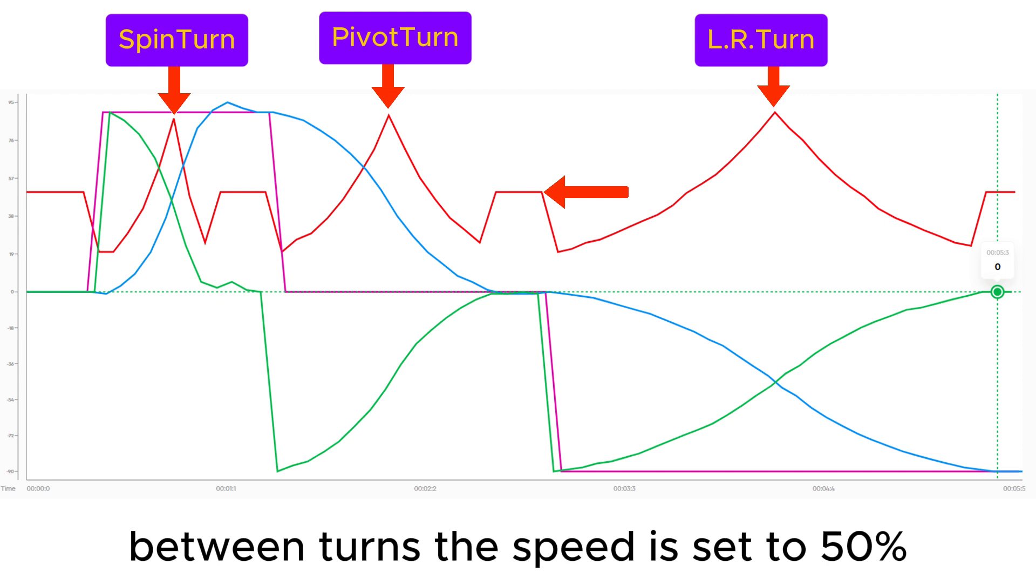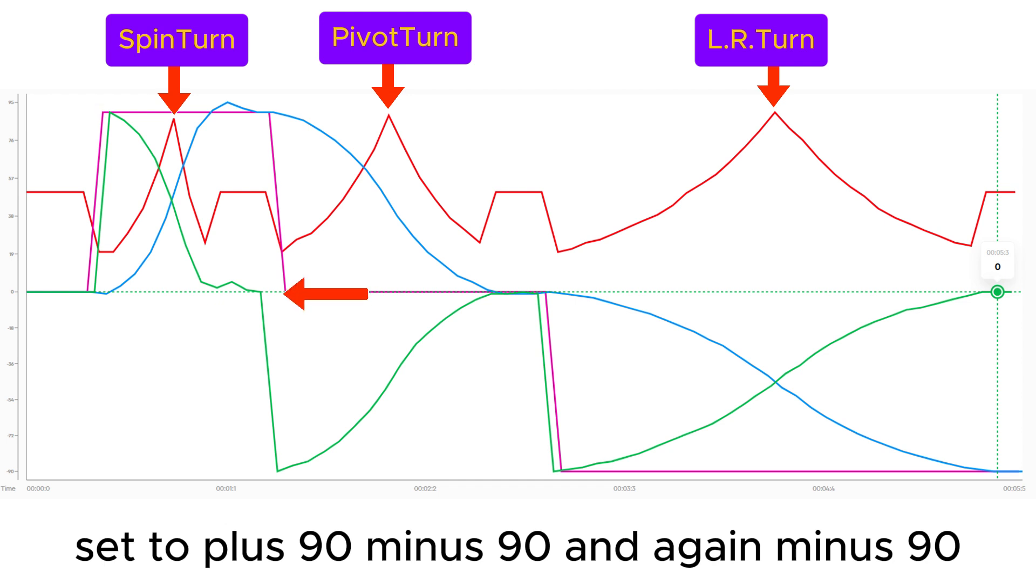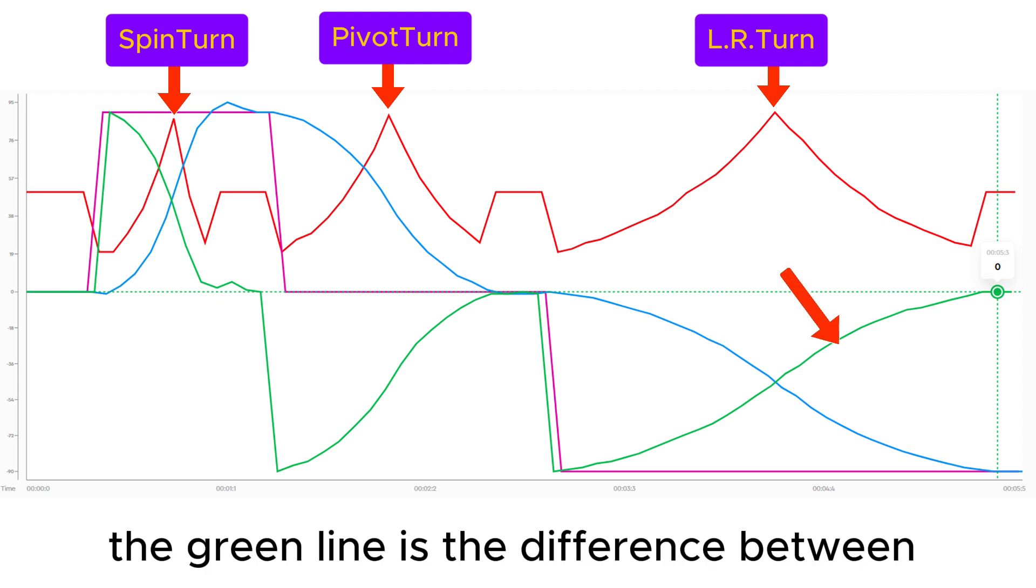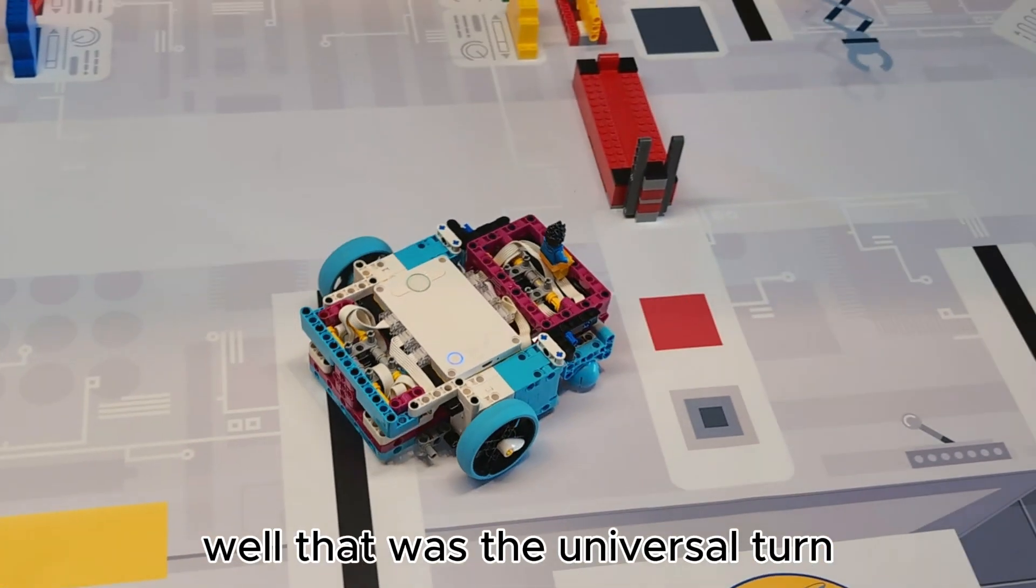Between turns the speed is set to 50%. The purple coloured line shows the yaw target set to plus 90, minus 90 and again minus 90. The blue line shows the yaw sensor following the yaw target. The green line is the difference between the yaw target and yaw sensor.